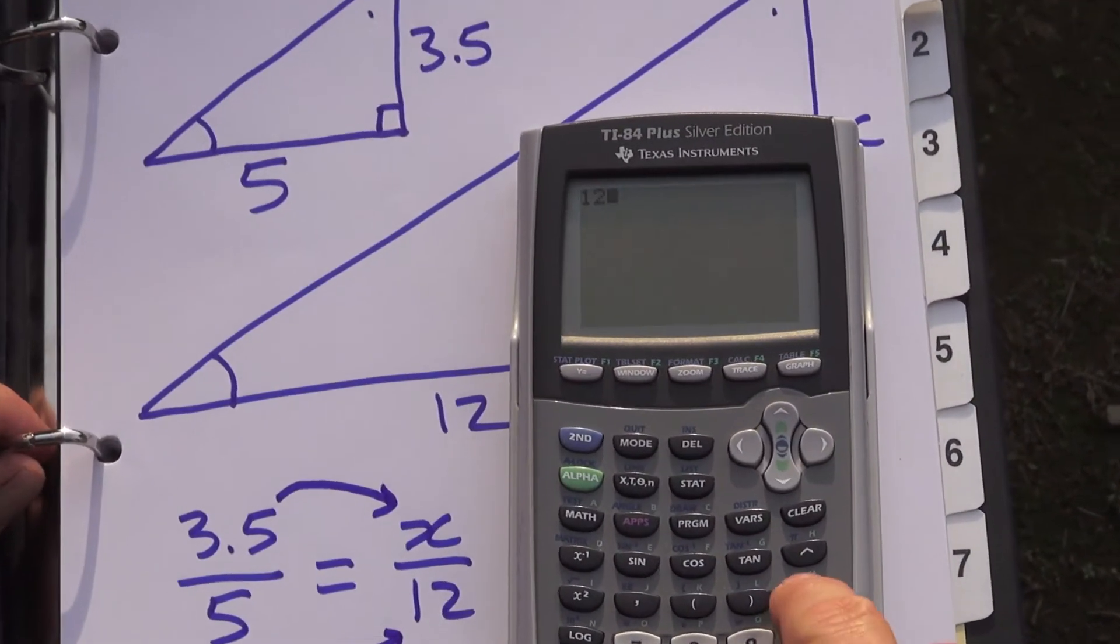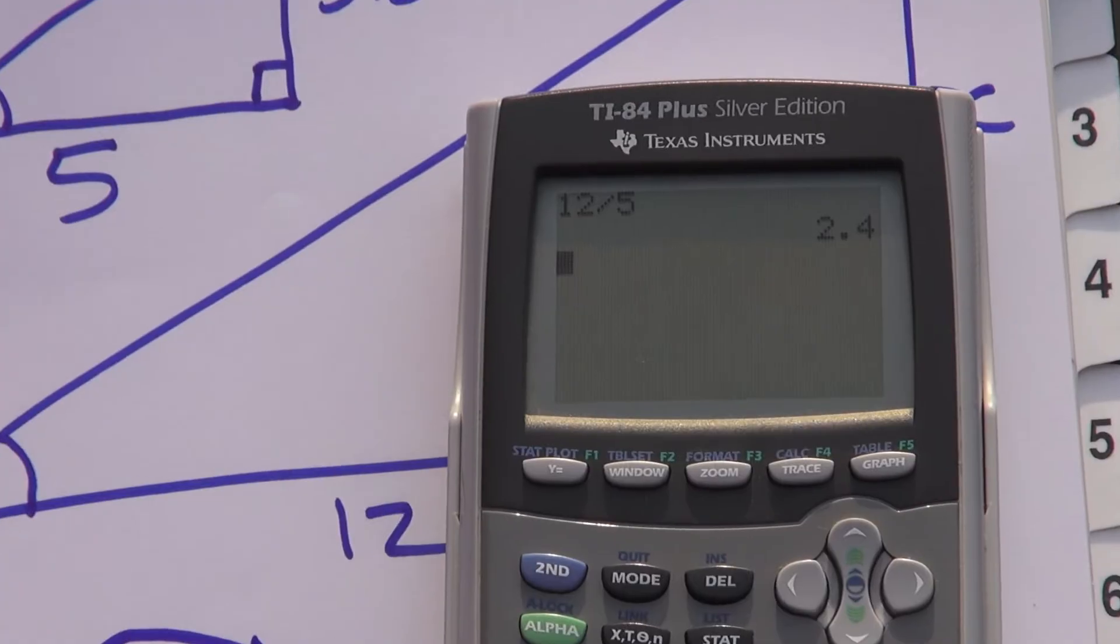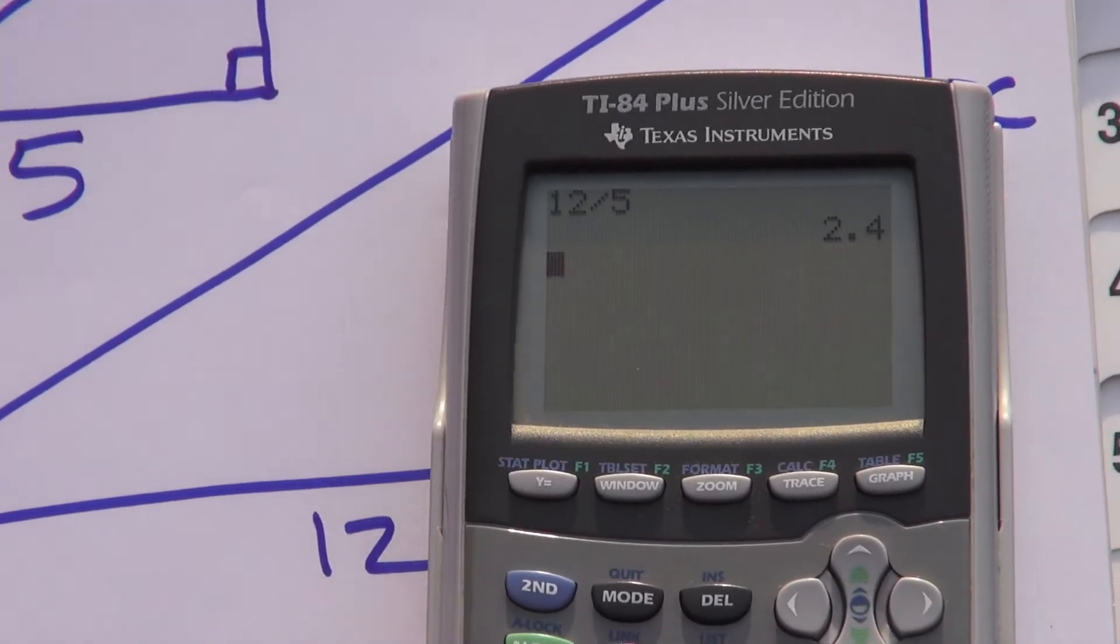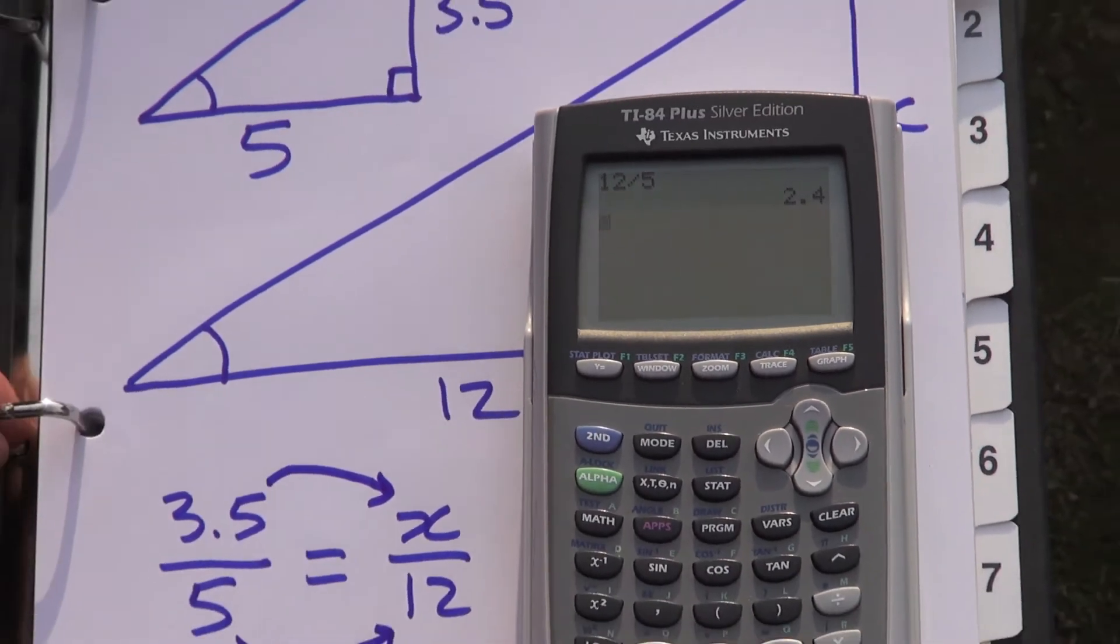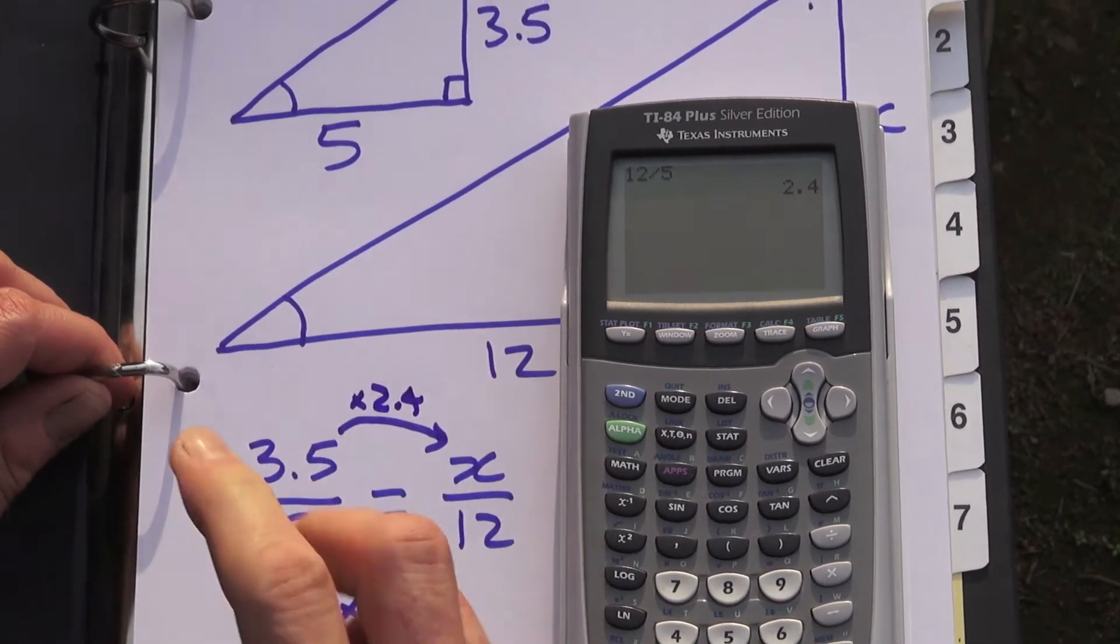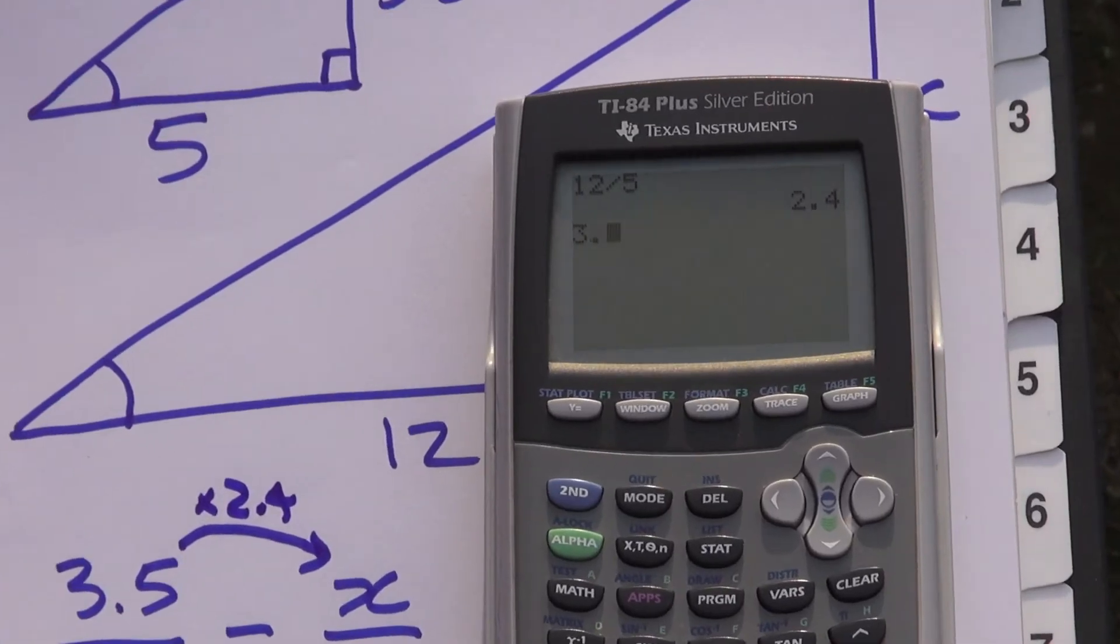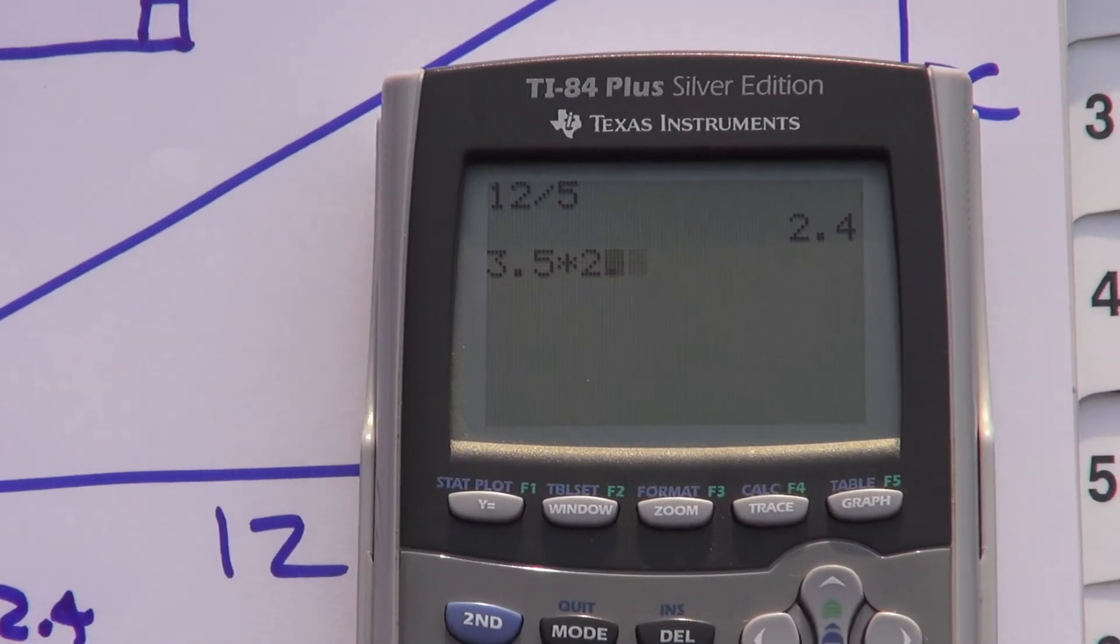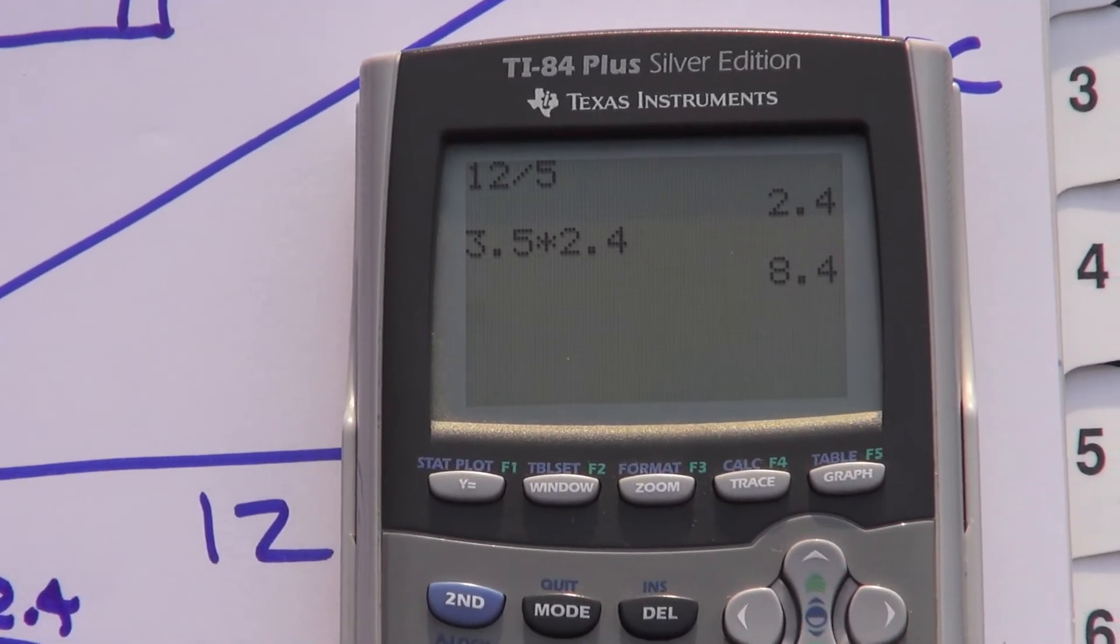So we want to know what's 12 divided by five. So we know this is times 2.4 and then we know we have to multiply this by 2.4 so if we go 3.5 times 2.4 we have 8.4.